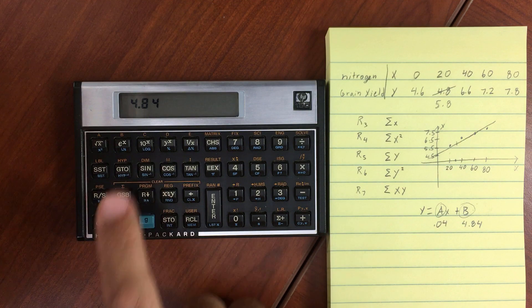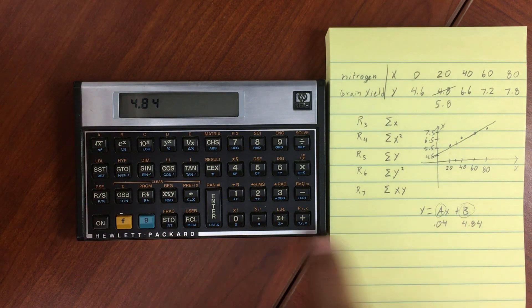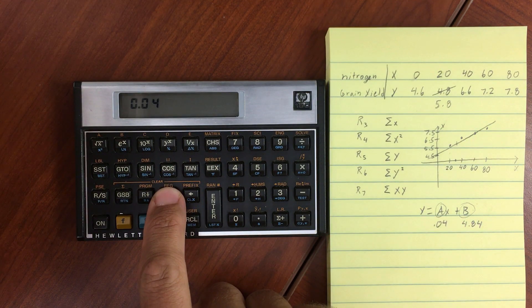Again, in the X portion of the stack we've got our Y-intercept, our B. And in the Y portion of the stack we have our slope.